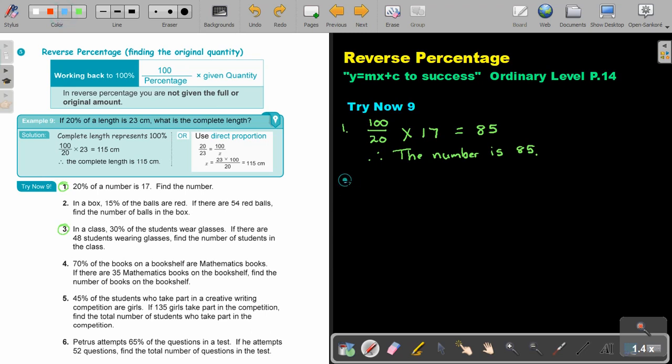Okay, let's look at the next one. Number 3. In a class, 30% of the students wear glasses. If there are 48 students wearing glasses, find the number of students in the class, the full amount. So I am going to say 100 over 30 and I am going to multiply it by 48. And that is going to give me 160. So therefore, find the number of students. There are 160 students in the class.